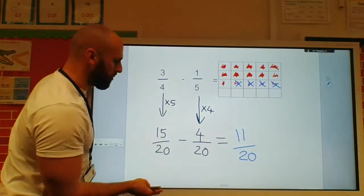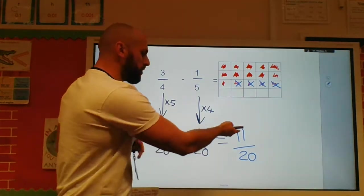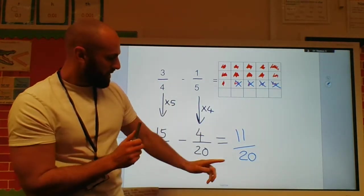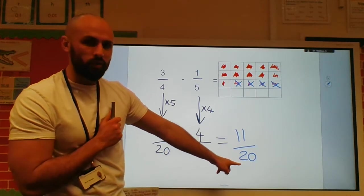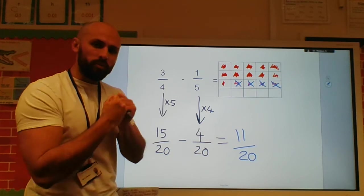Remember, the denominator is how many parts there are to the whole. And the numerator is how many parts we have. That is why the denominator is not changing. It's the numerator that's changing. The amount that we have.